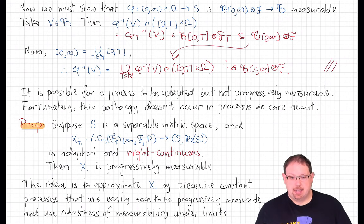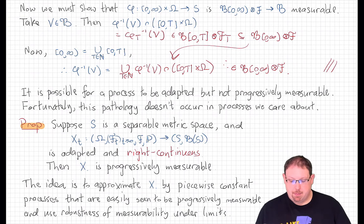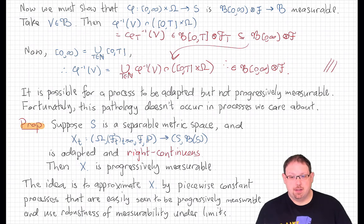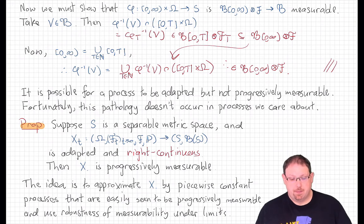The counterexample we gave earlier certainly didn't have any of this nice adaptedness structure. We've seen that progressive measurability implies adaptedness — perhaps the converse is also true. Maybe any adapted process is automatically progressively measurable, or at least measurable in the weaker sense so that we can compose with a random time and get a measurable map. It turns out that's not true. Progressive measurability is strictly stronger than adaptedness, although I'm not going to take the time to go through a counterexample now — it'll be instructive to try to find one in the literature. But fortunately, this pathology does not occur in right continuous path processes, which include all of the ones we've thought about in this course.